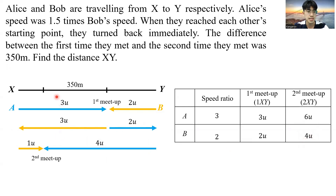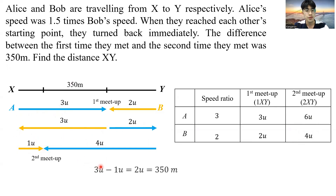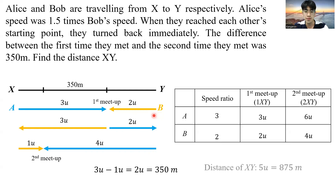From here, we see that this 350 meters is the difference between 3 units and 1 unit. So we know 2 units of distance corresponds to 350 meters. From there, we can easily work out the total distance of XY, which is 5 units — that's 875 meters. And that solves our last problem for today.